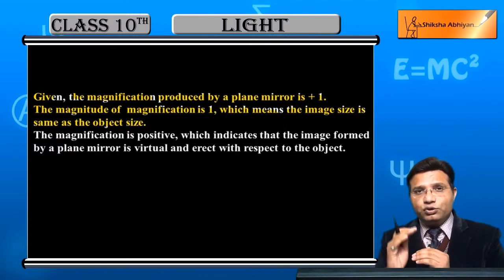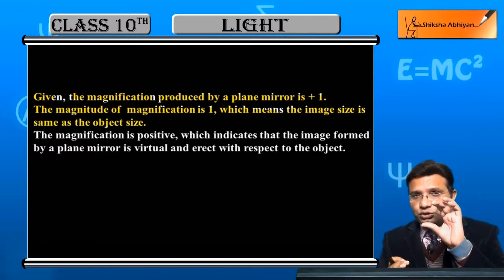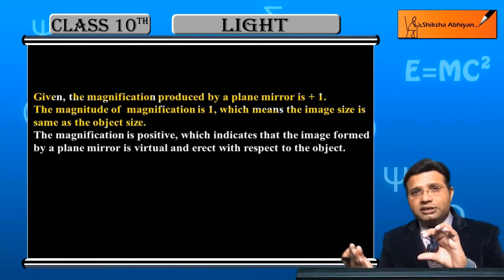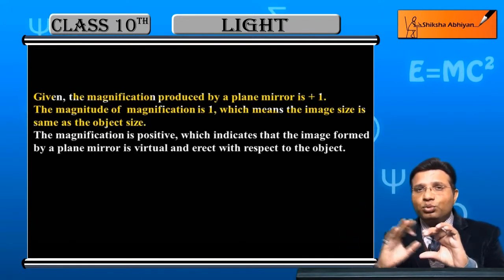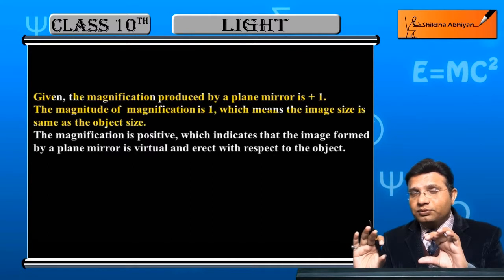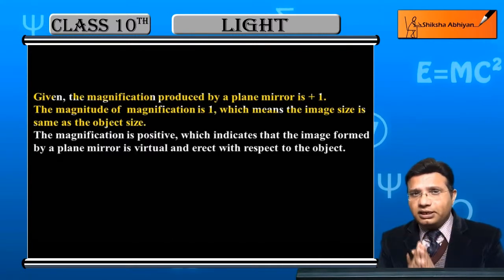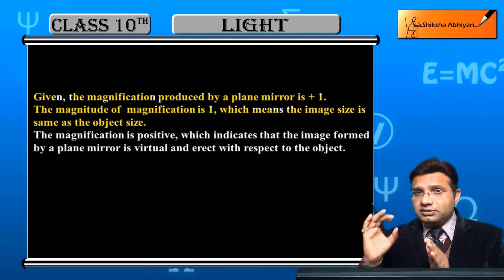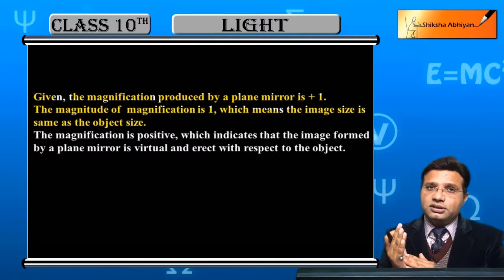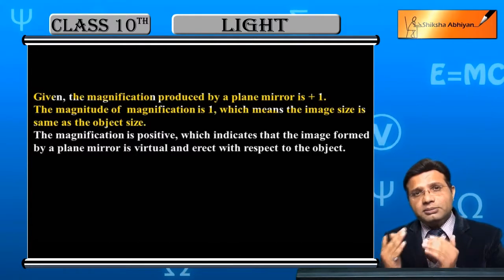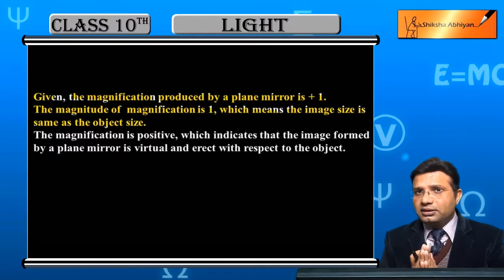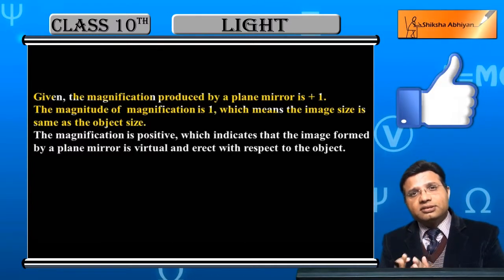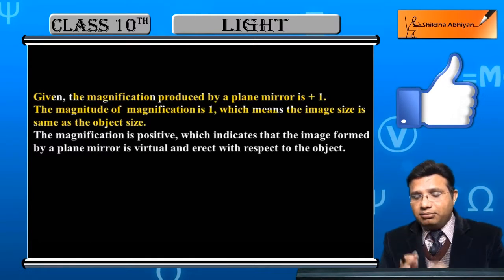If the magnification value is 1, it means the object we placed and the image formed inside the plane mirror — both have the same size. And this is always the case for a plane mirror. But in the case of a spherical mirror, the size can be smaller or larger. A plane mirror always forms an image of the same size. So the meaning of getting 1 is that the object size and image size are the same.